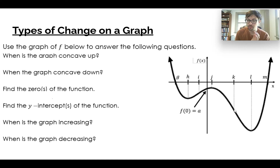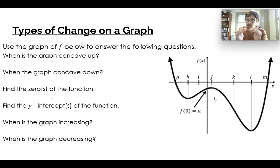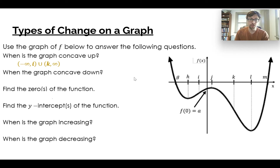We've also got that cup that could be holding water here. But between i and k, we are not able to hold water — we'd just spill out into those other two areas. So we are concave up from negative infinity to i.